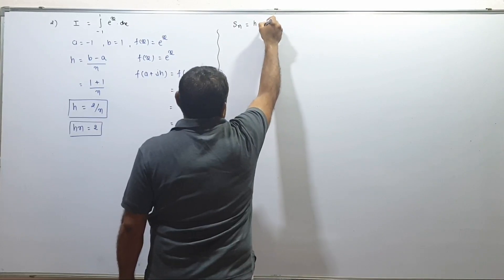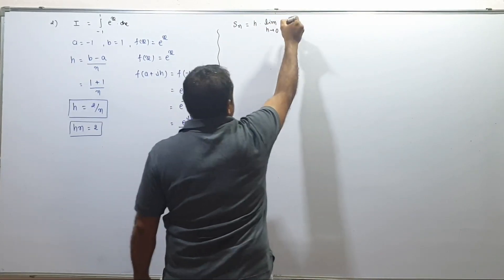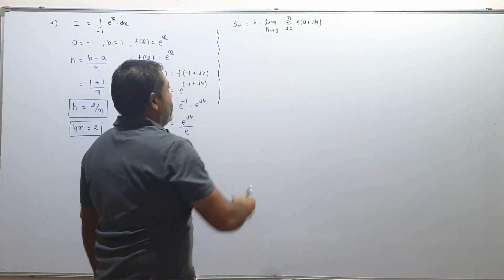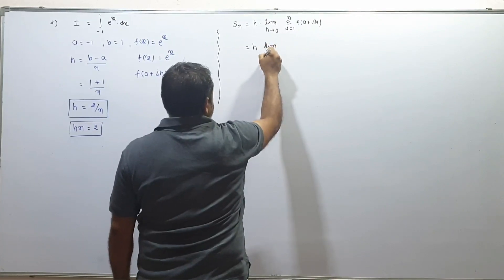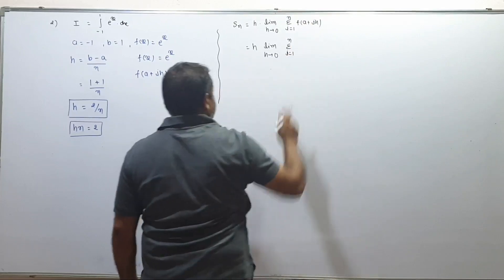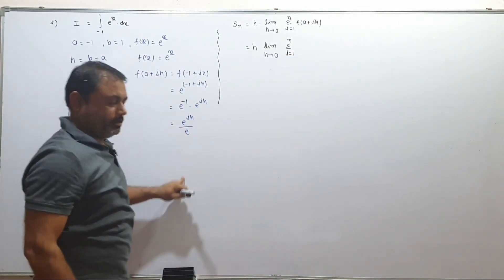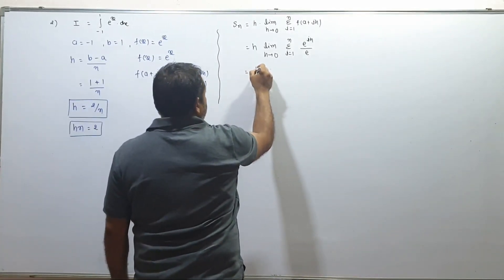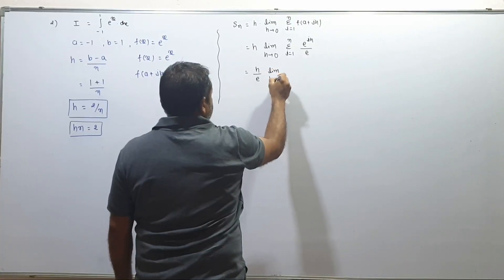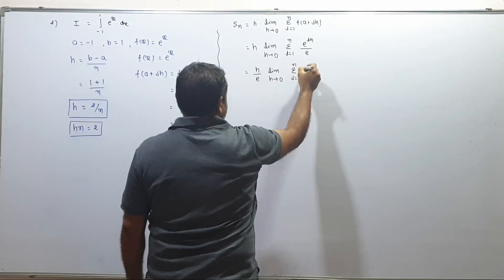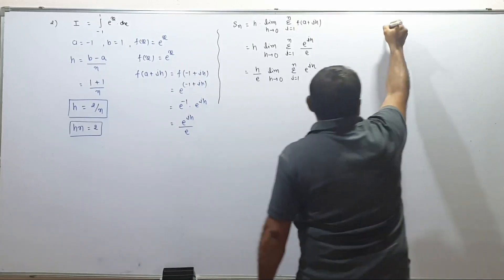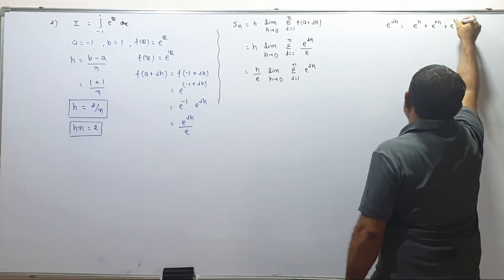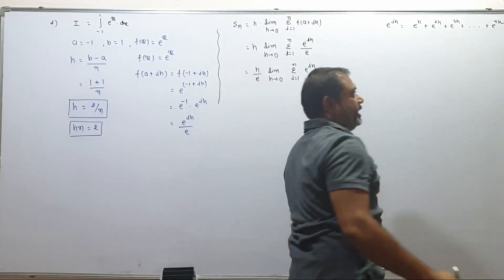S_n equals h, limit h tends to 0, sigma i equals 1 to n, f of (a plus i·h) equals e^(i·h) upon e. So the sum becomes: limit h tends to 0, sigma from 1 to n of [e^(ih)/e]. The terms are: e^h, e^(2h), e^(3h), ... e^(nh). Clear?